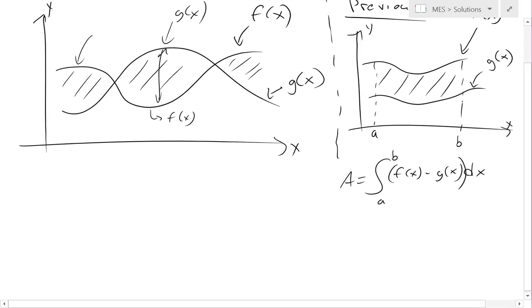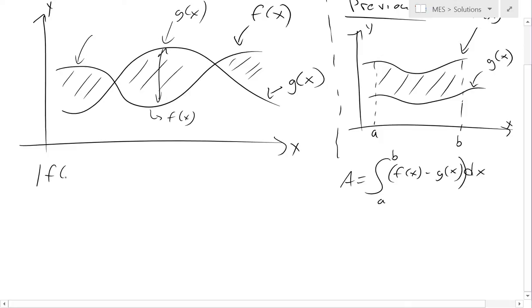So, to get the area of this, we need to look at, instead of this, we need to look at the absolute value of f of x minus g of x. And now when we look at this f of x minus g of x, the absolute value, this could also be written as two functions.